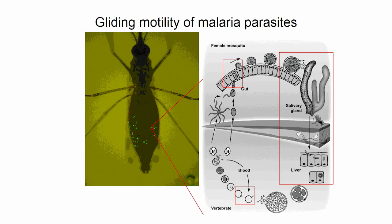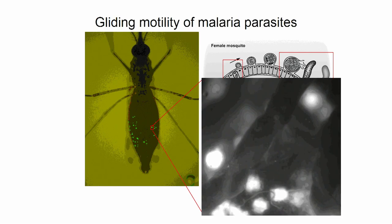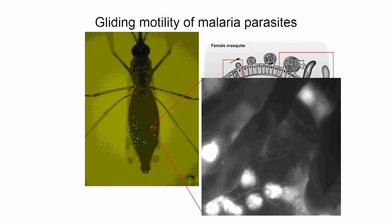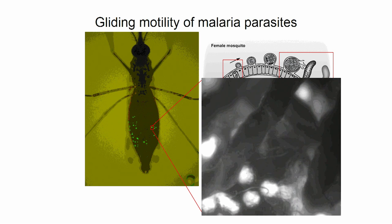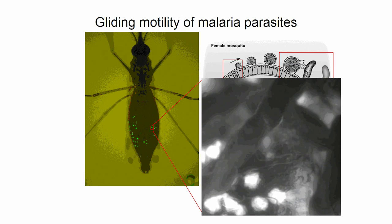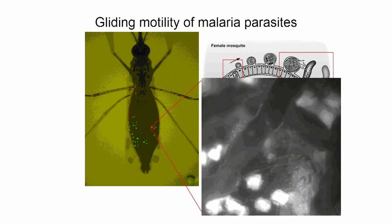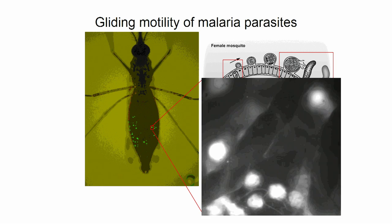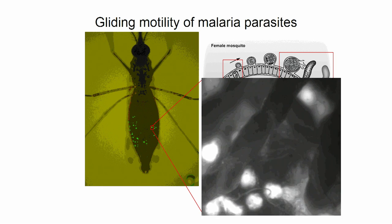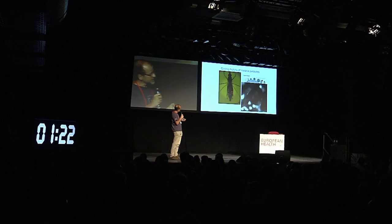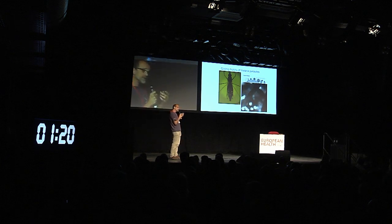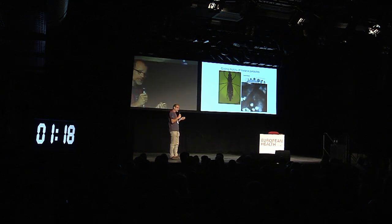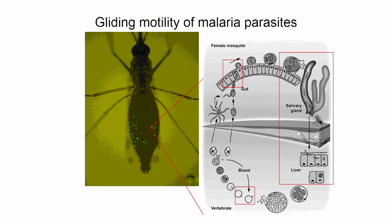We can then also film how these parasites are bursting out from the cyst. The cyst on the left — you can see this is very reminiscent of the process of sporulation. Hence these parasite forms are called sporozoites. They float around the mosquito body cavity until they attach to and invade the mosquito's salivary glands.